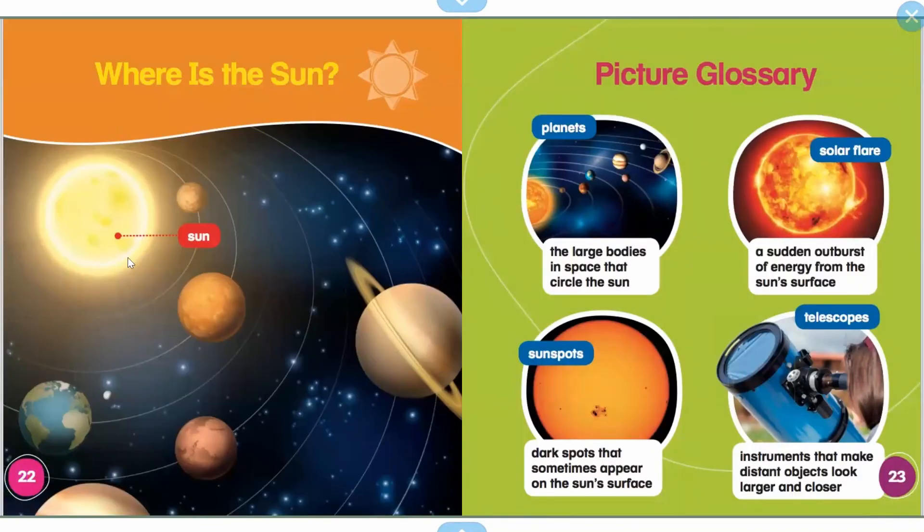Where is the sun? So the sun is right here in the center. It's in the center because everything goes around it. So the sun stays put, it does not move and all the planets circle or orbit. Orbit is another word for going around. It goes around the sun.